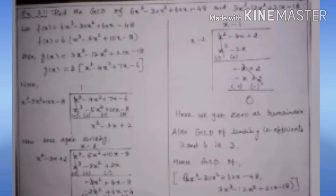Since the remainder is now 0, we stop. We had taken factors 3 and 6 outside earlier, and the GCD of 3 and 6 is 3. The expression that gave us remainder 0 is X − 2. So the GCD of the whole sum is 3(X − 2).